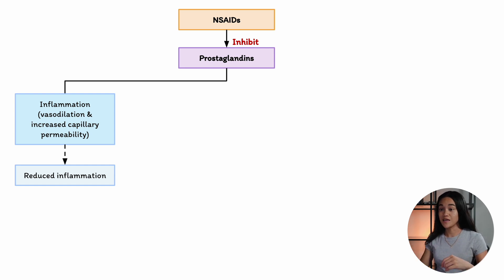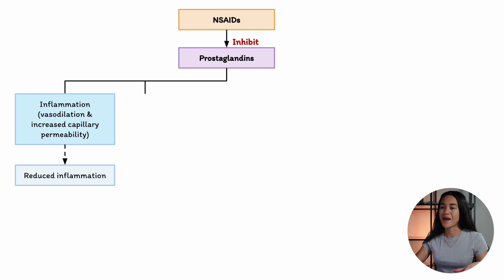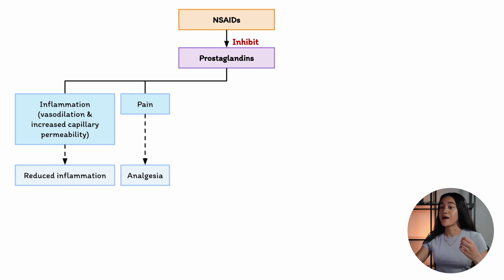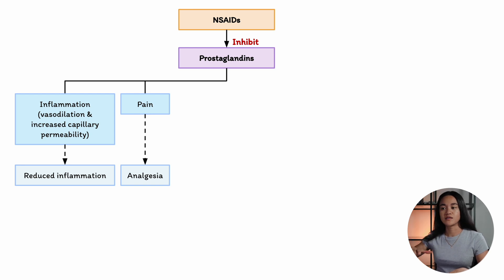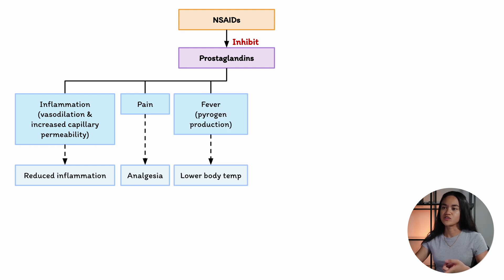Second, pain relief: prostaglandins enhance the body's sensitivity to pain by interacting with pain mediators. NSAIDs block this process, reducing pain caused by inflammation. Third, lowering fever: prostaglandins also play a role in raising body temperature during fever.